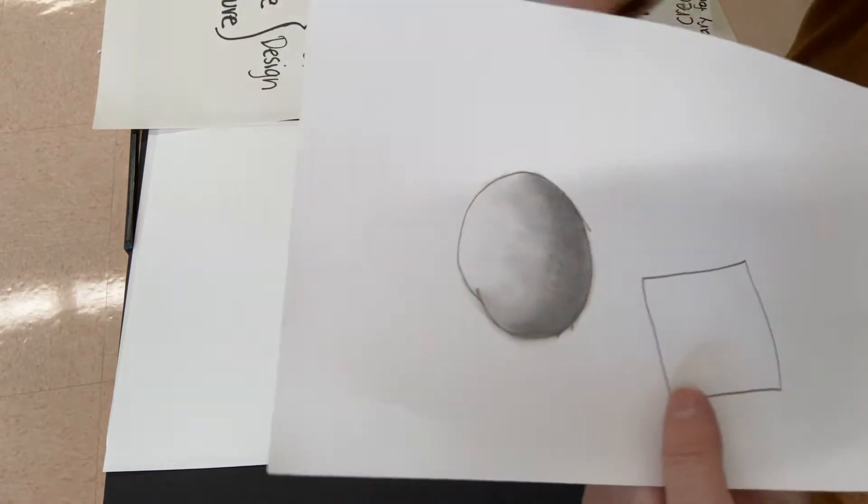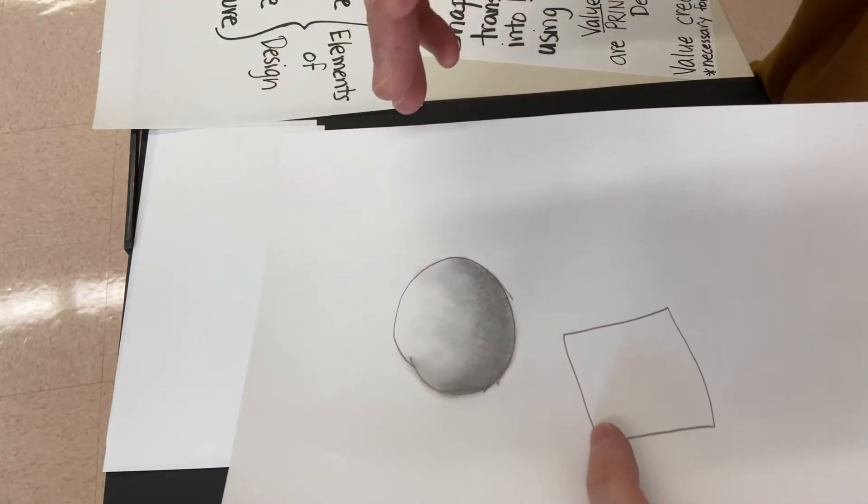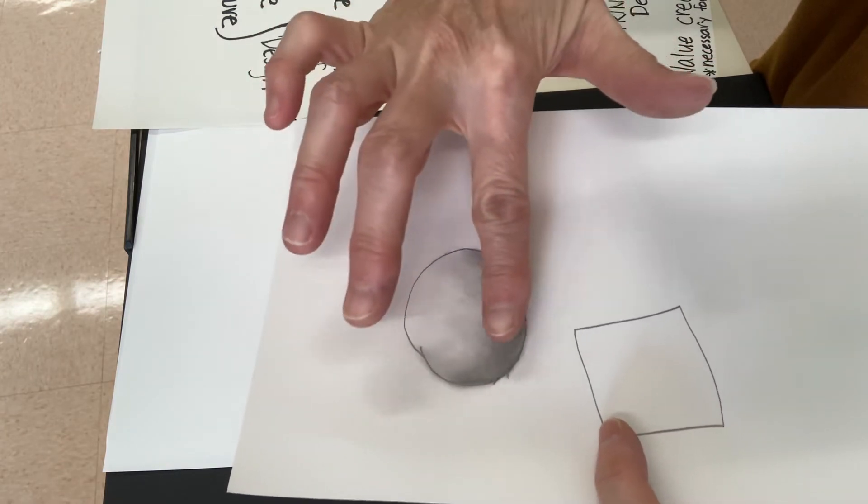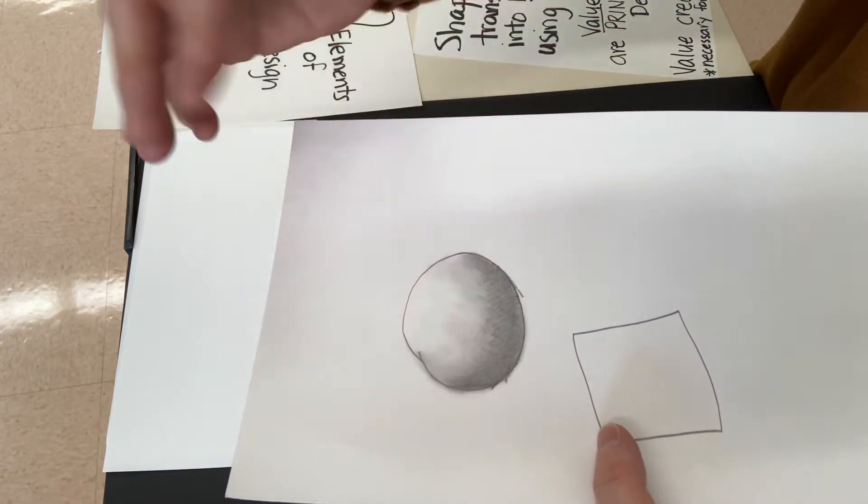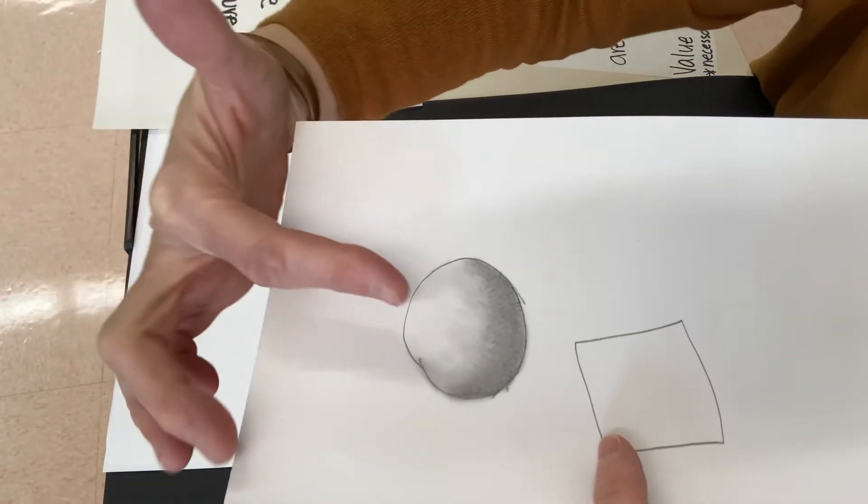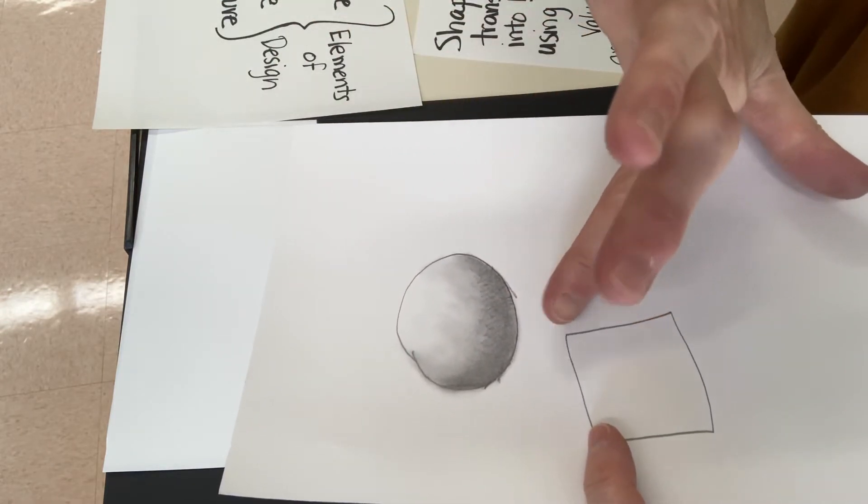The more pencil I have on it, the layers of pencil that I have, it's going to be a darker area. As I use the q-tip to smudge it, it's going to get lighter and lighter and lighter. And what that does is it makes the image look like there's light hitting it, and then there's a shadow on the opposite side.